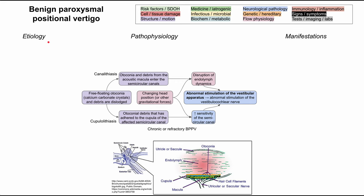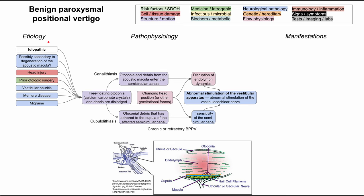The etiology is similar for both. Most of the time — about 50% or more of cases — the etiology is idiopathic. Other possible causes include degeneration of the acoustic macula, head traumas such as traumatic brain injuries and quick decelerations, prior otologic surgeries, and other causes of vertigo such as vestibular neuritis and Meniere's disease, which are the second and third most common causes of peripheral vertigo. Migraines have also been associated with BPPV.